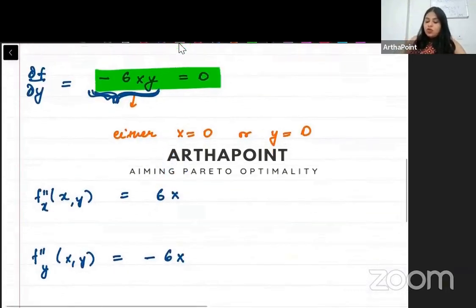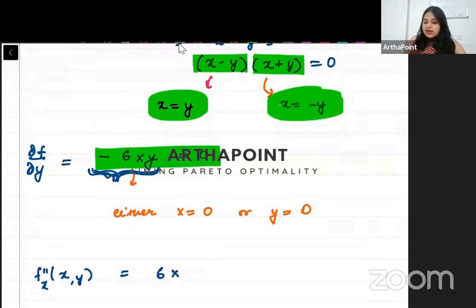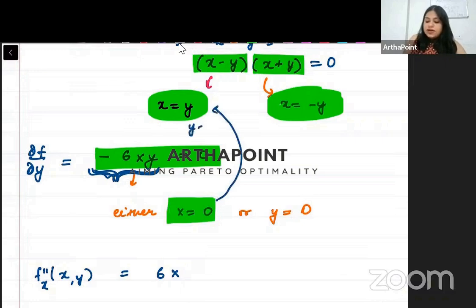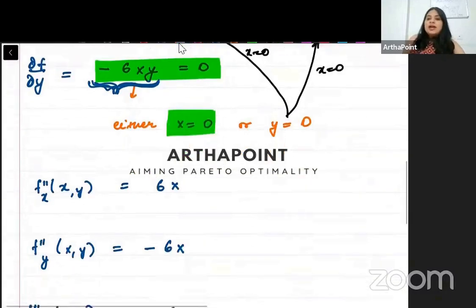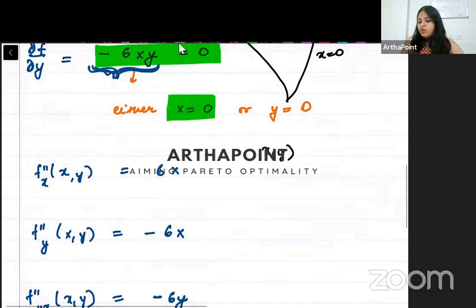Notice that if x is 0, then y is automatically 0 from both equations. And if y is 0, then x is also 0. So ultimately the only point, the only combination that I can make, is (0, 0).